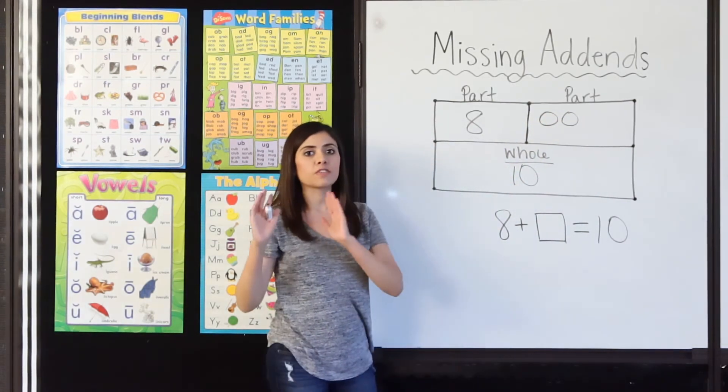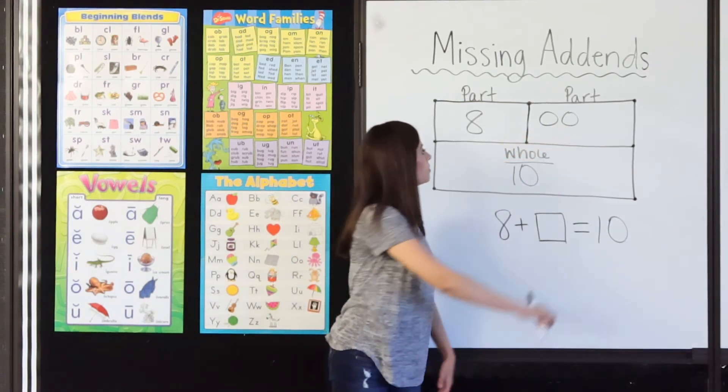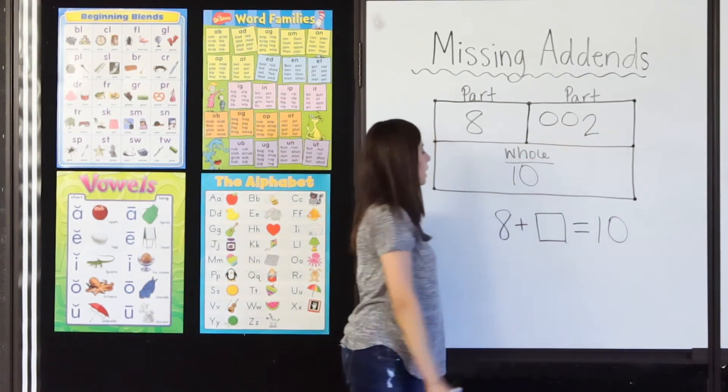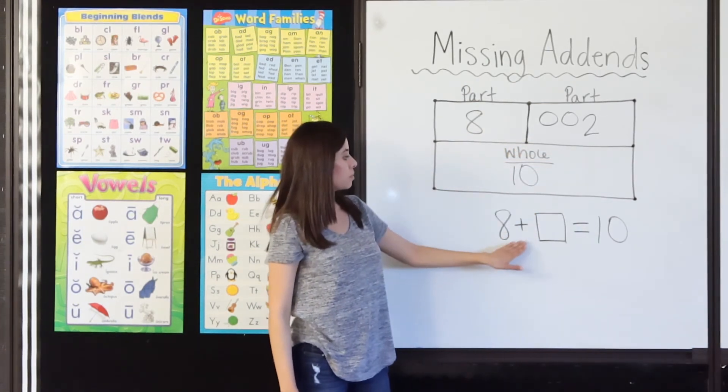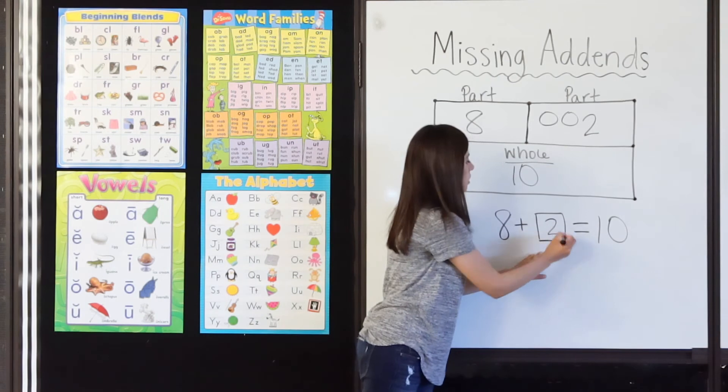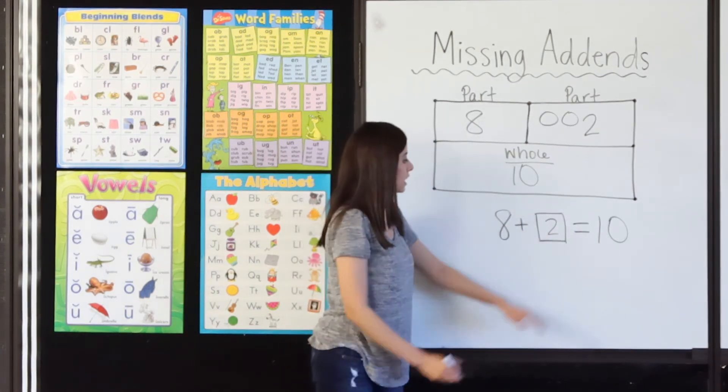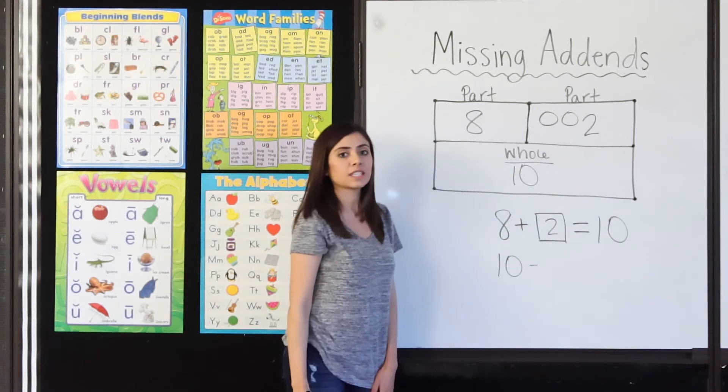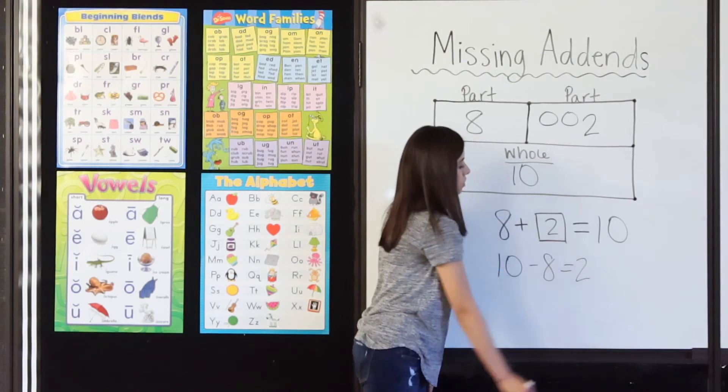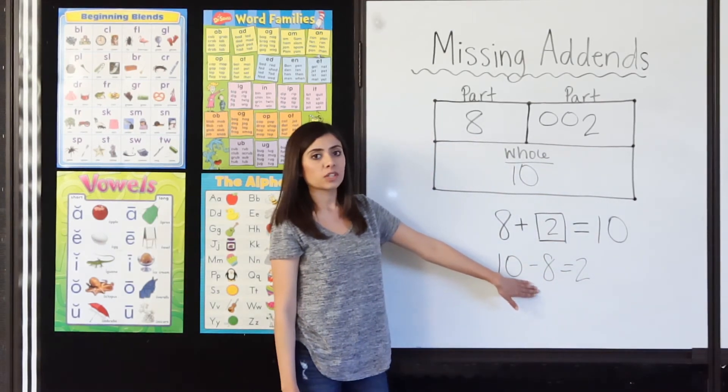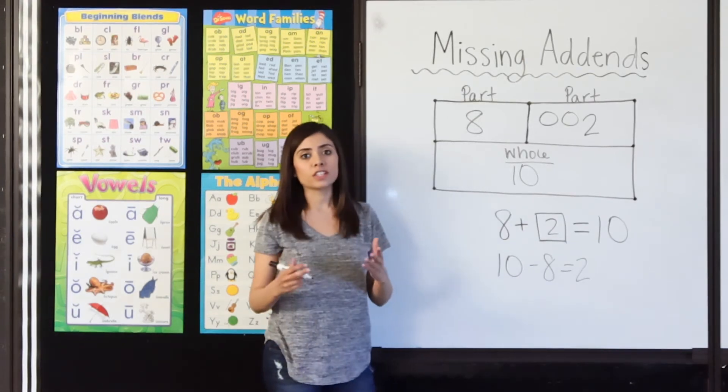How many circles did it take to get from 8 to 10? 1, 2. That means that 8 plus 2 equals 10. 8 plus 2 equals 10. And once again, I could have taken 10 and subtracted 8. That equals 2. So that would have helped me find my missing addend as well. Related facts are very useful.